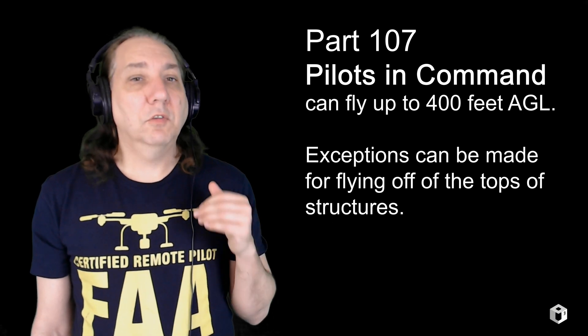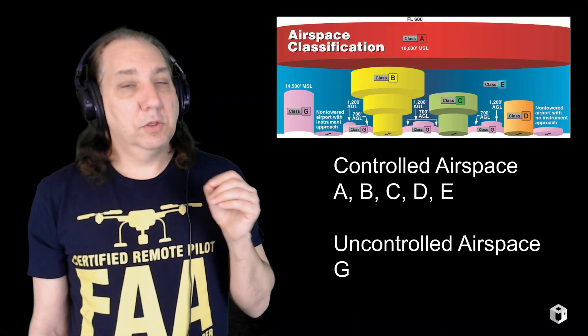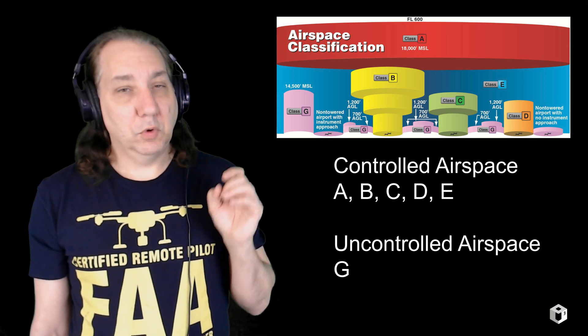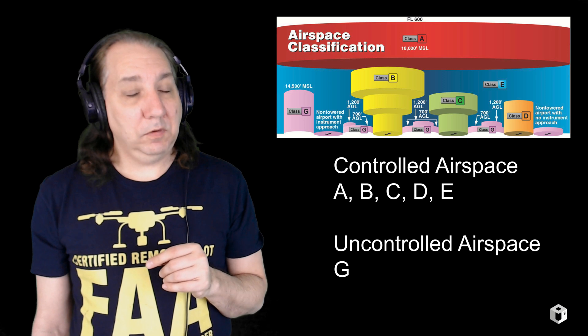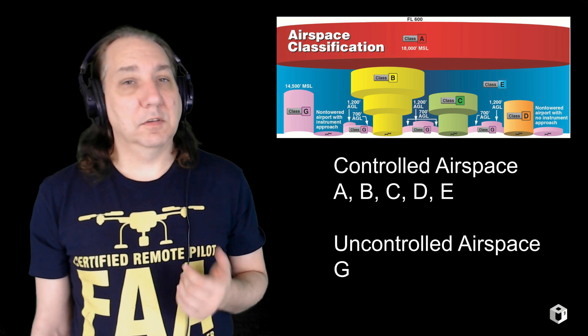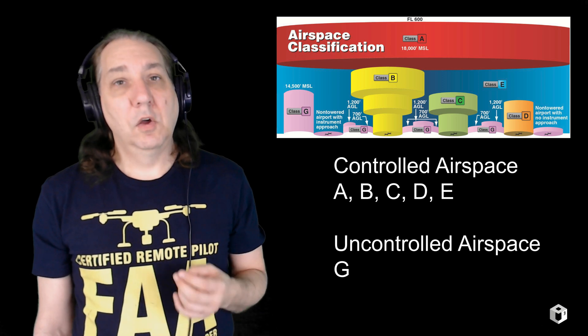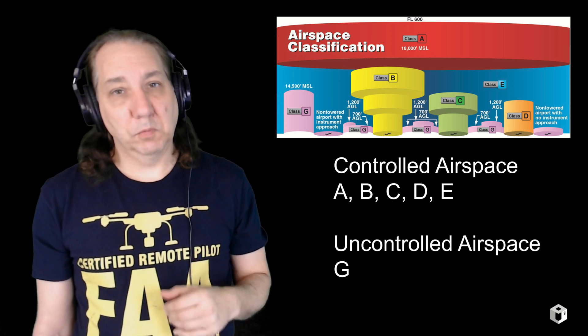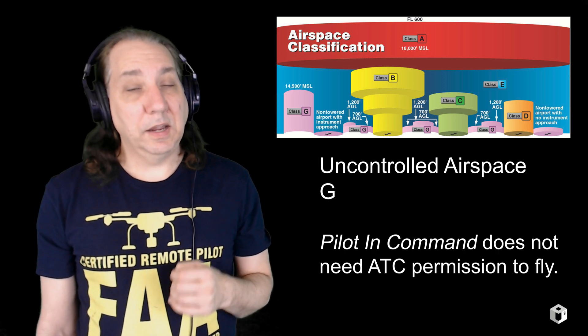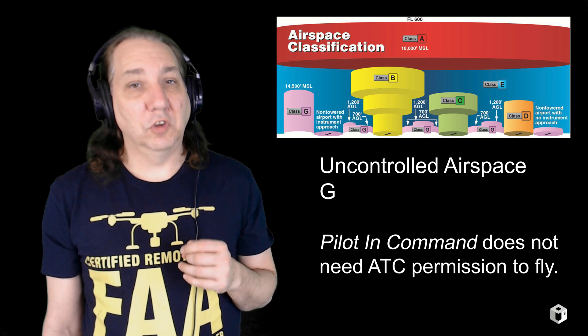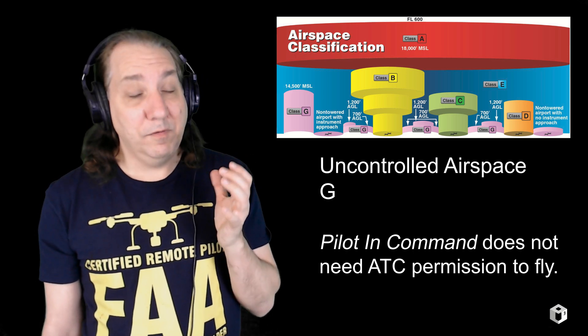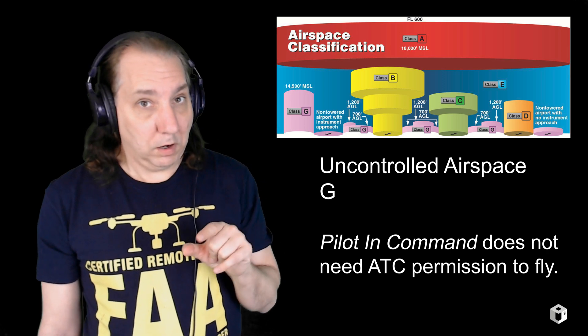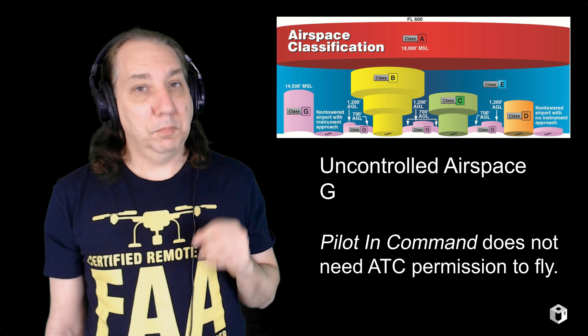For now, just remember: 400 feet AGL. Let's talk about airspace. On an aeronautical map there is controlled and uncontrolled airspace. Controlled airspace is A through E. Uncontrolled airspace is G — everything that's not designated as B, C, D, E, or any of the special areas we'll get to later. A remote pilot does not need air traffic control authorization to operate in Class G airspace. We love Class G — it's great.